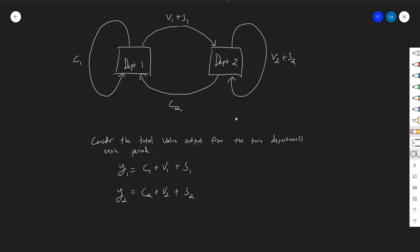Just as before, we're still concerned principally with these two variables: the total value output from the two departments each period. We have y1, the total value of all the things department one makes, and y2, the total value of everything department two makes, and these things will be changing each period.